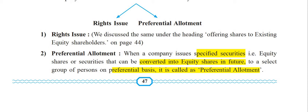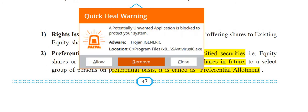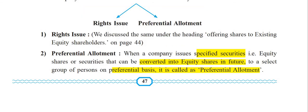The second method is preferential allotment. When a company issues specified securities — that is, equity shares or securities that can be converted into equity shares in future — to a select group of persons on a preferential basis, it is called preferential allotment. Specified securities are those that can be converted into equity shares in future.